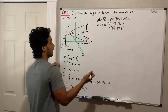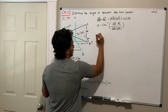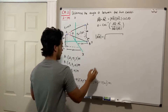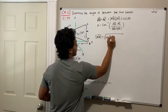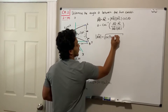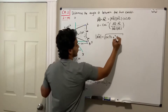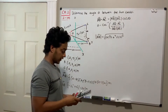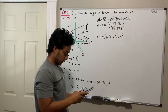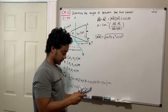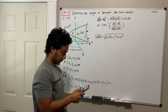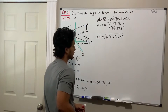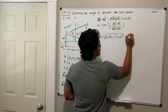Now let's find the magnitude of vector AB. We take the square root of (−2)² + (6)² + (−3)², which equals the square root of 4 + 36 + 9. That gives us a magnitude of 7 meters.